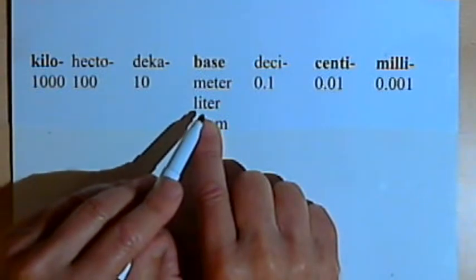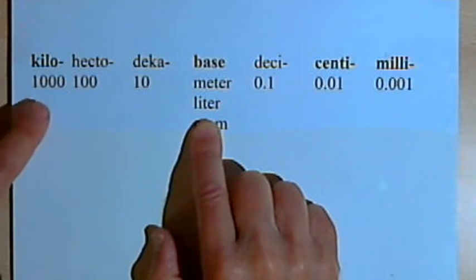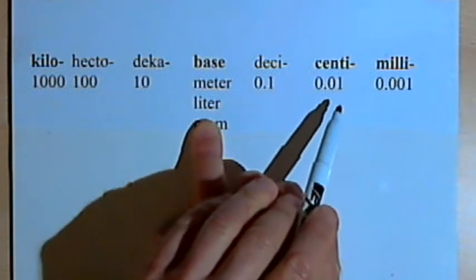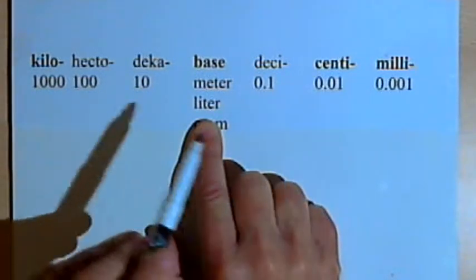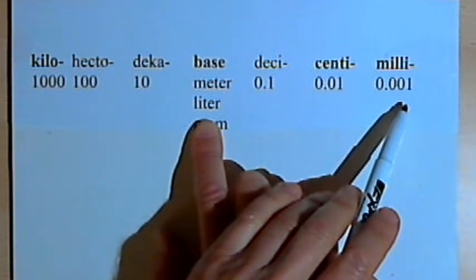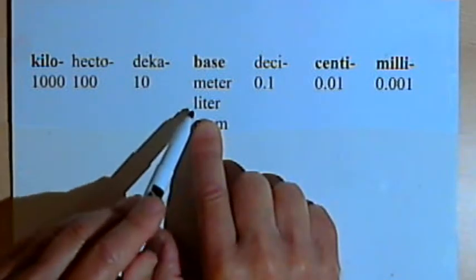If we have a lot of liquid, or a large volume, then we have a kiloliter, which is a thousand liters. If we have a small volume, we have a centiliter, that's one-hundredth of a liter, and even smaller than that is a milliliter, or one-one-thousandth of a liter.